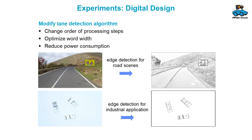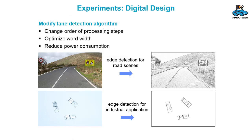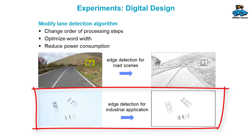Our Remote Lab is open for different experiments in the field of image processing. In the video lecture we cover the algorithm of lane detection, and as digital design experiments you can modify the edge detection, change the order of processing, optimize the word width, reduce power consumption, and apply it for other applications like industrial image processing.